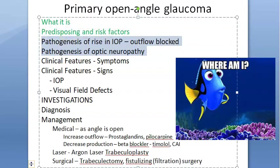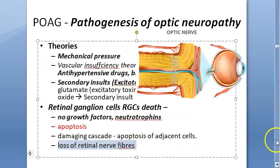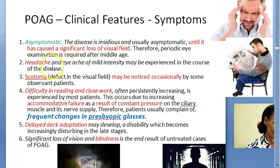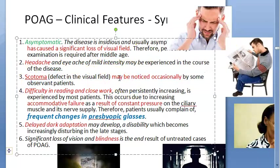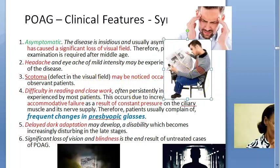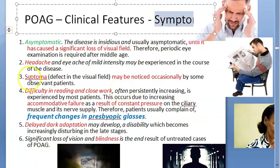Clinical features and symptoms: patients can be asymptomatic until they develop major visual field defects. They may have headache, eye ache, and mild symptoms. Occasionally they may notice a scotoma — a negative scotoma where they don't realize they cannot see parts of their visual field. Difficulty in reading and near work is also common due to accommodative failure from raised intraocular pressure.